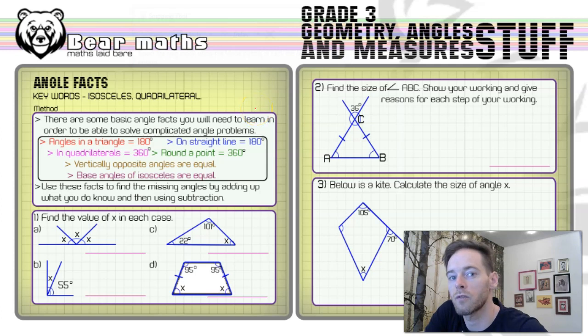Hi there folks and welcome to video number 149. This video is on angle facts. Keywords I've got for you are isosceles and quadrilateral. An isosceles is a shape where the two base angles are the same. Now we refer to isosceles triangles quite frequently. Don't often talk about isosceles trapeziums, but they exist as well. So the two base angles in an isosceles trapezium will be the same.